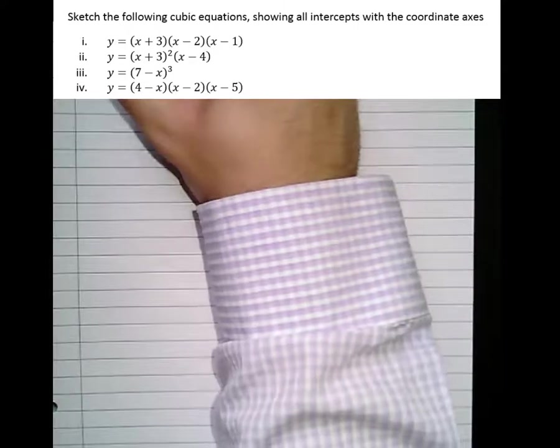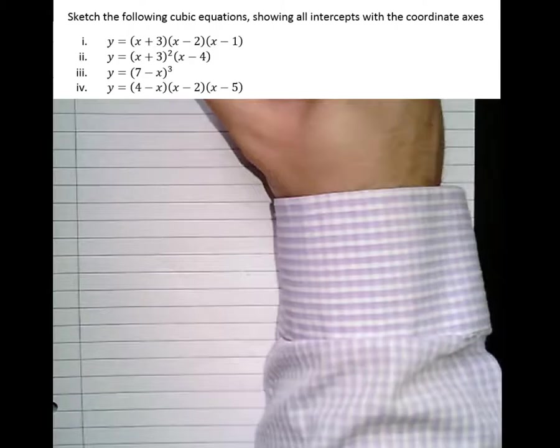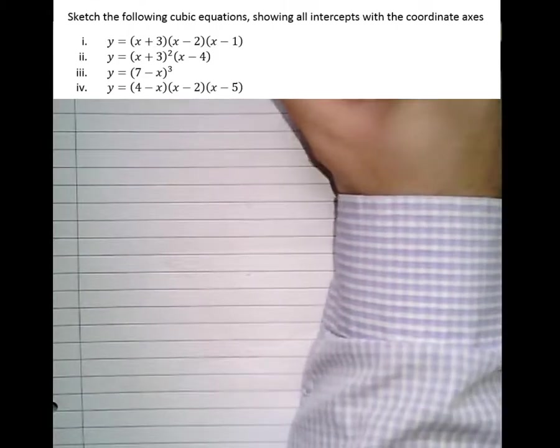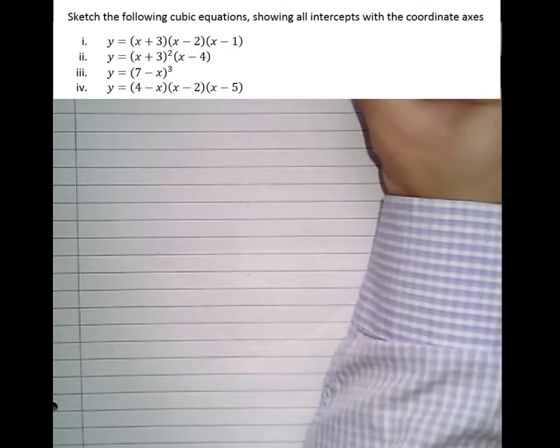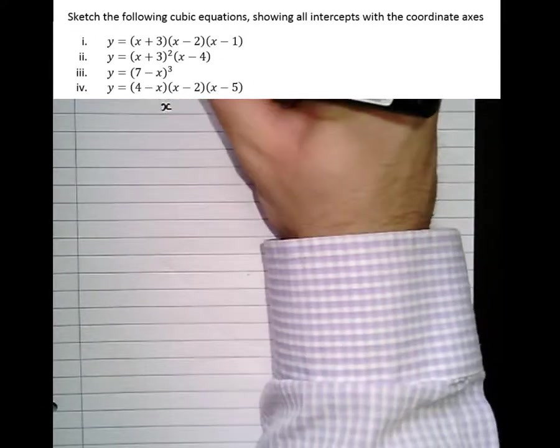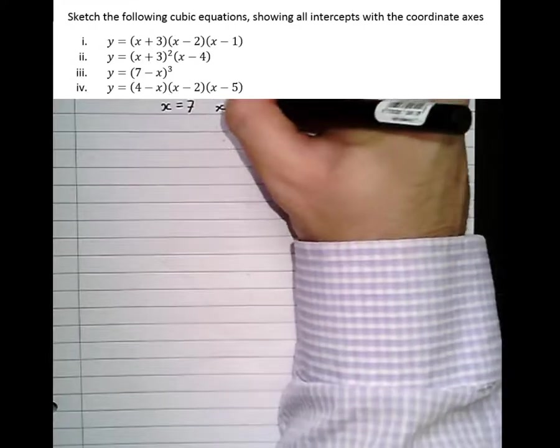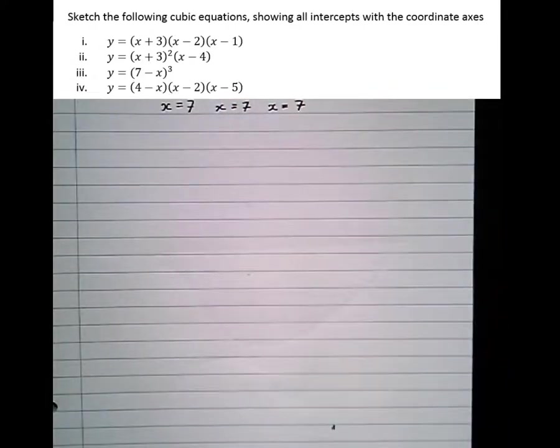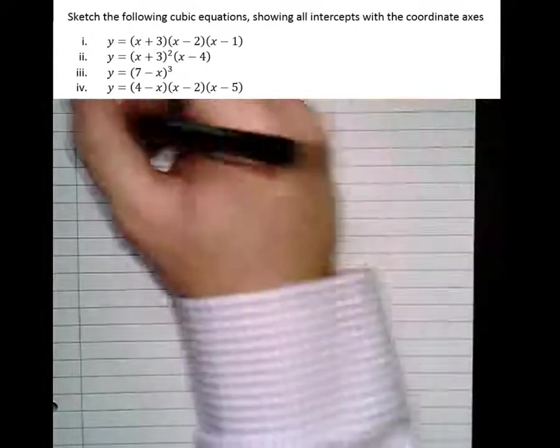Y equals (7 - X)³. So let's write it out in full. Y equals (7 - X)(7 - X)(7 - X). And the X intercepts, or roots, happen when it's equal to 0. So hopefully you can see here that when X equals 7, the bracket is 0. This one as well, X equals 7, X equals 7. And here you can see we've got a triple root.